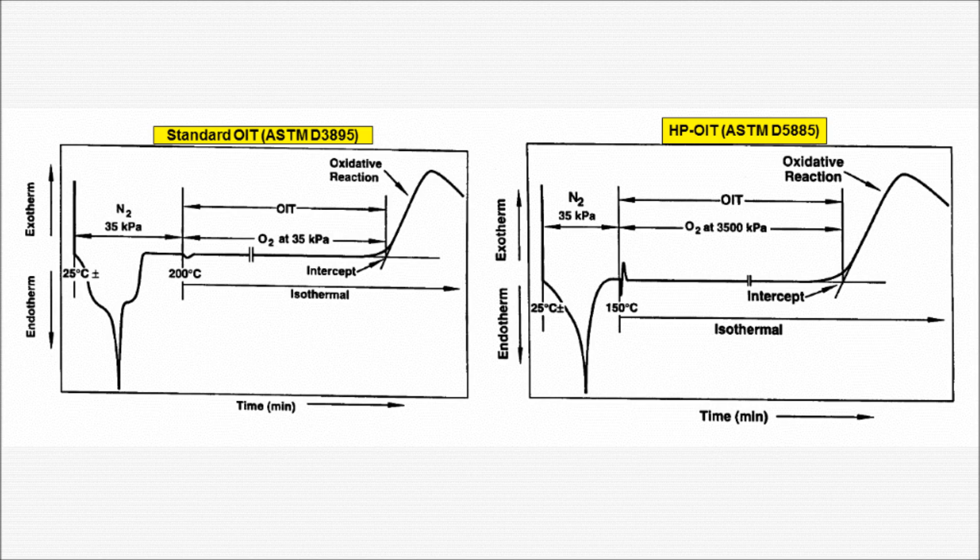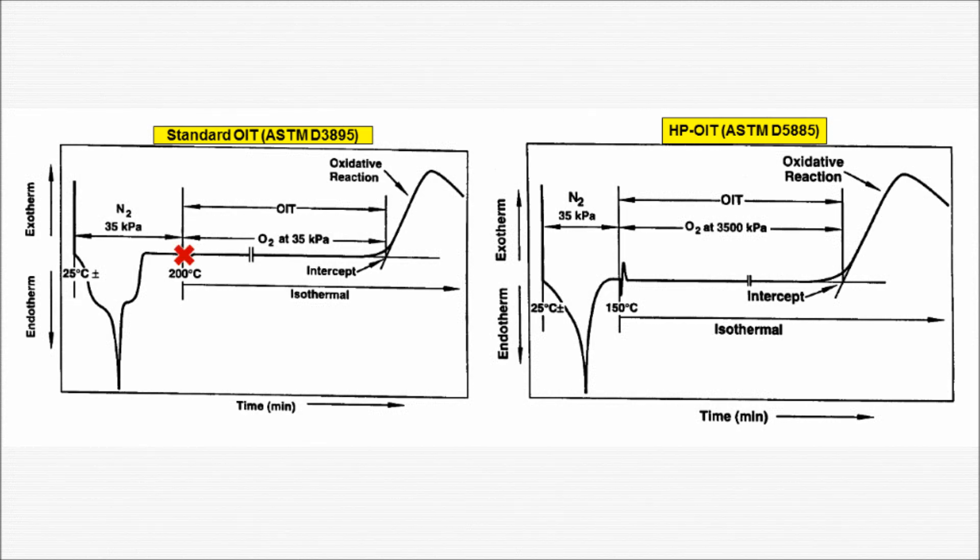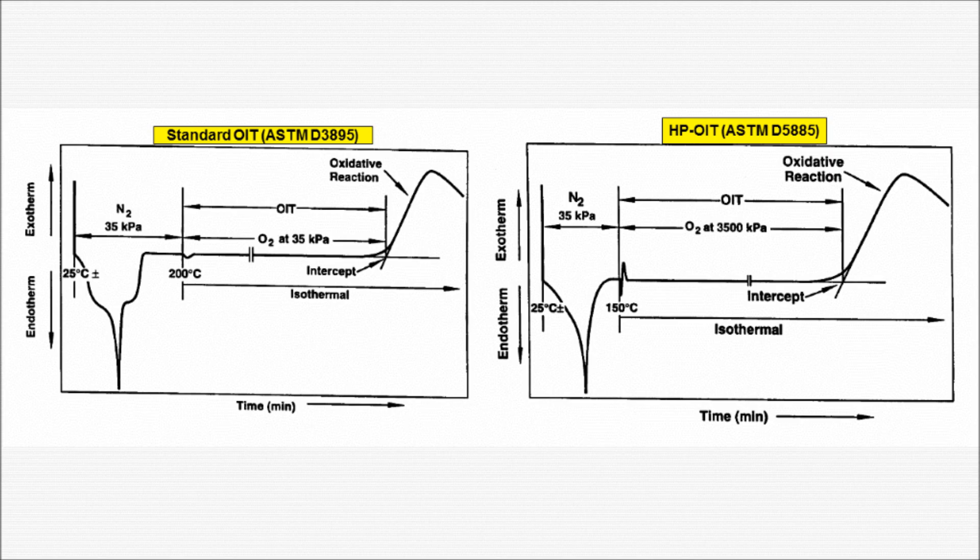We are now looking at the reference curves for both the standard and high pressure OIT tests. In the standard OIT test we are actively running, we just experienced the T sub 0 after switching to the oxygen gas. This point is located here, on the standard OIT graph, and the corresponding T sub 0 is located here, on the high pressure OIT graph. The long horizontal portion of the graph is the isotherm, where the test is running currently. Please note the break in these graphs, indicating that the isotherm can be much longer than pictured above.